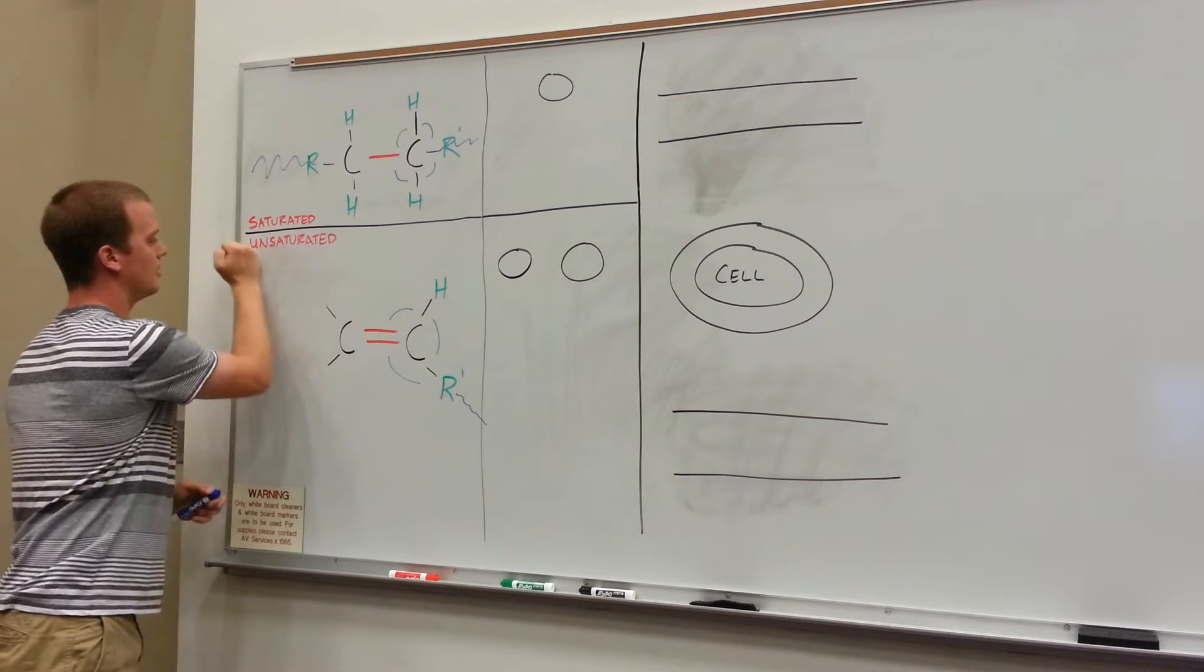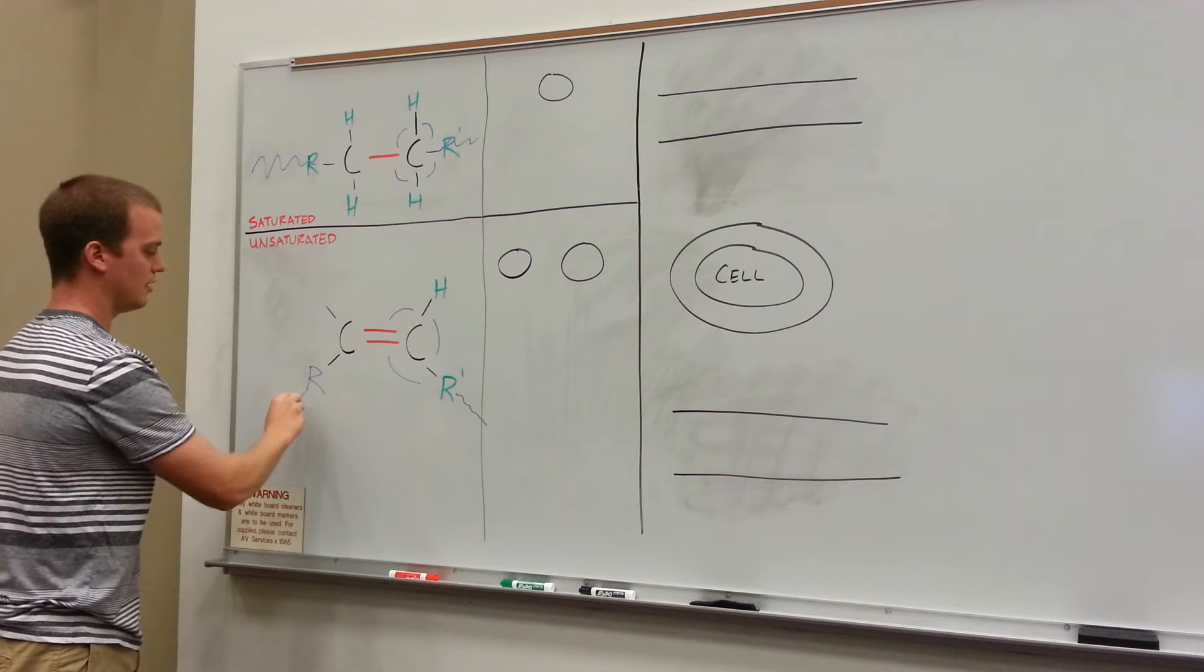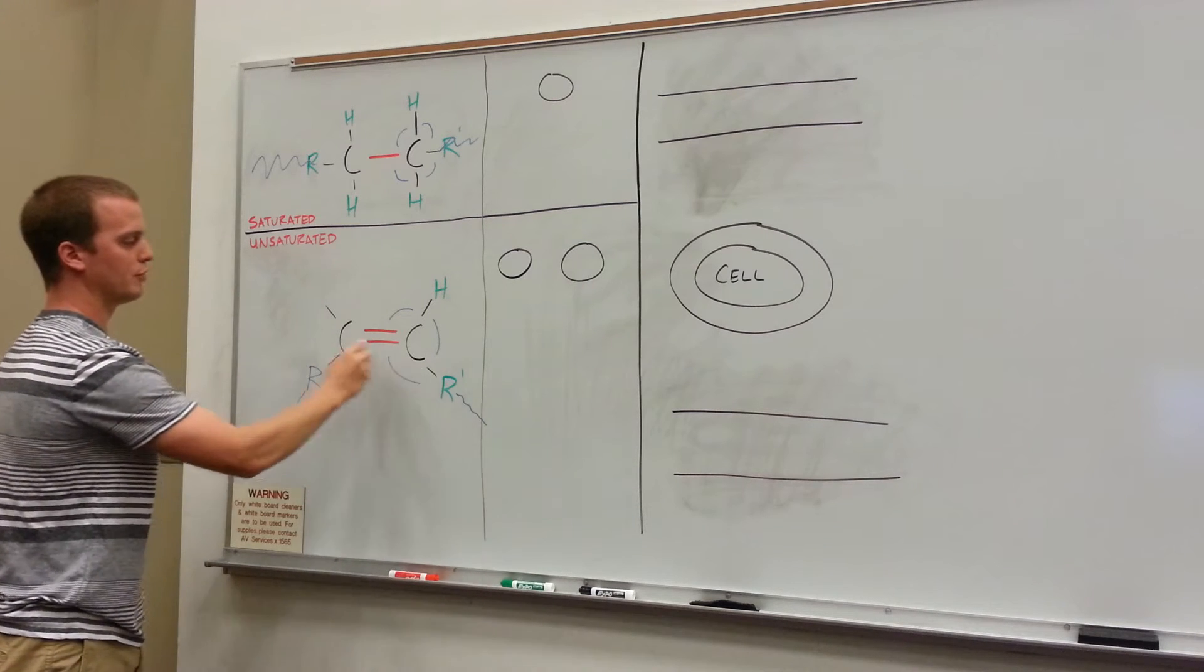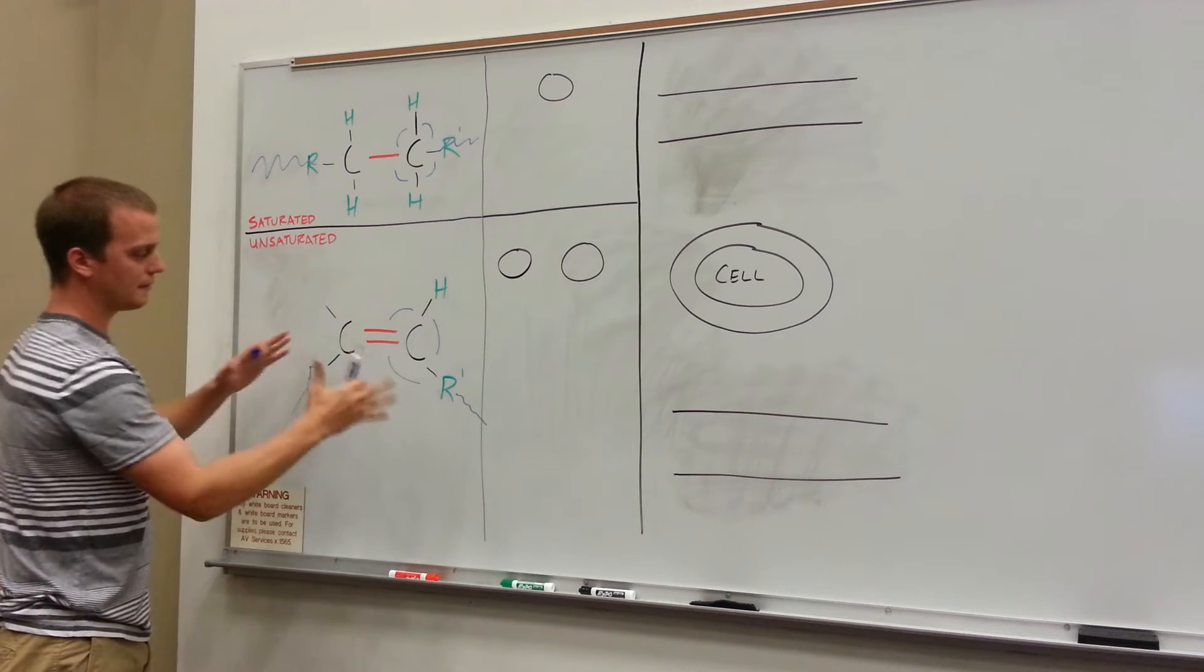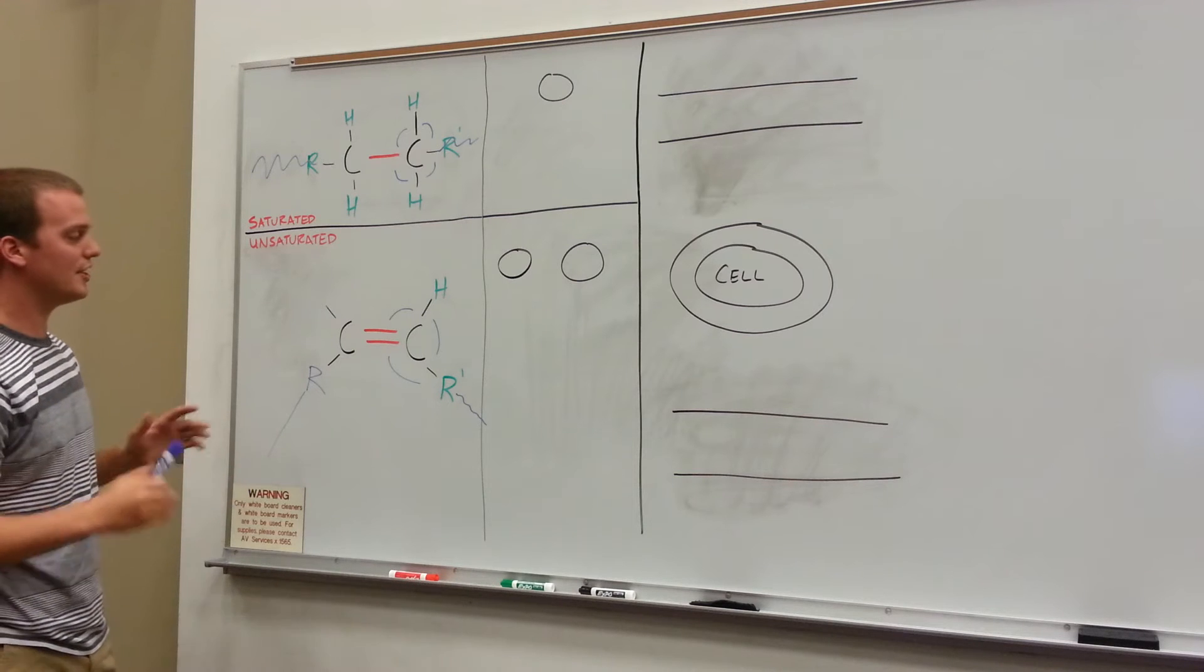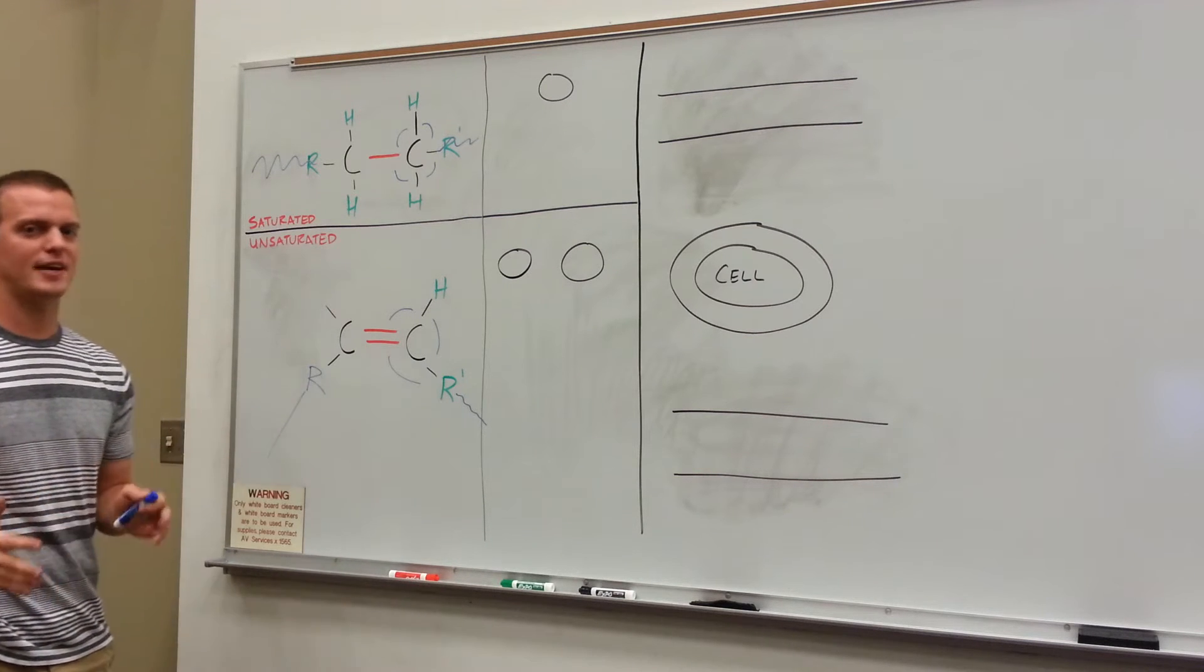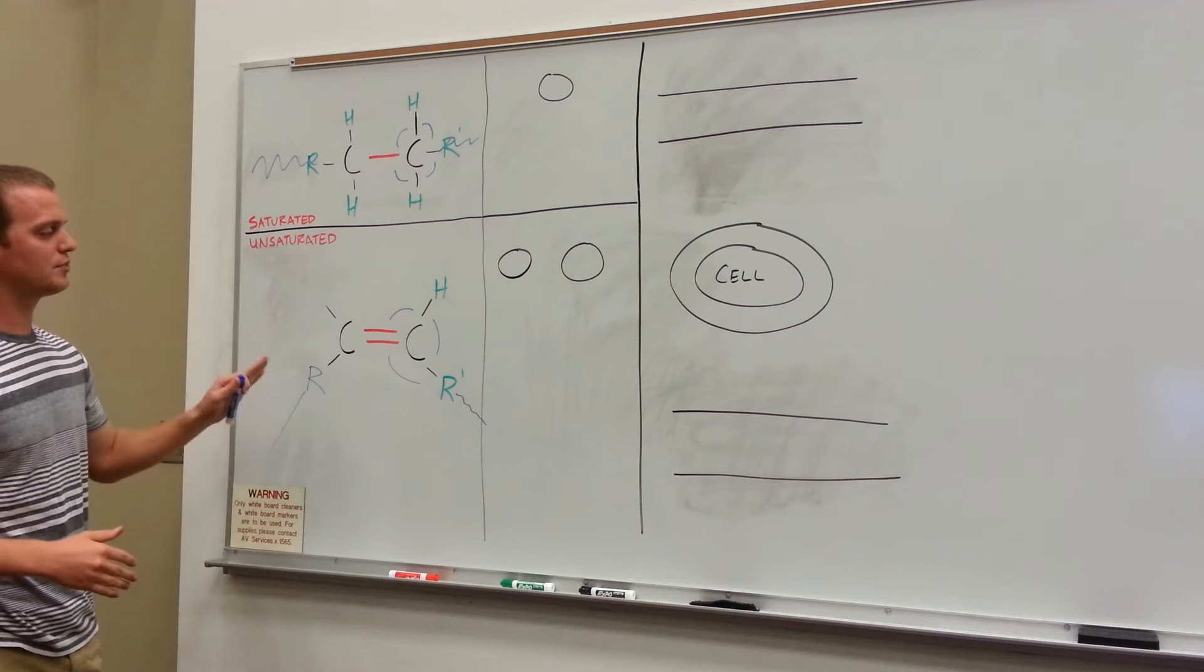However, if we put our R down here, you notice that now it's shaped almost like a boomerang, and this fatty acid will not be so linear in space. It's going to be much more bent, much more curved. And this is where the trans fats, the trans fats, the ones you've heard about that are really bad, this is where that comes from.